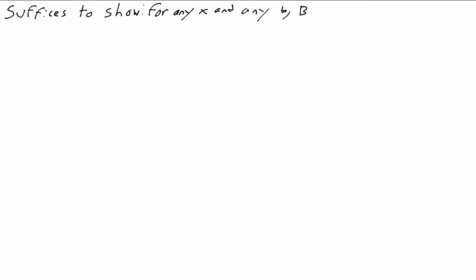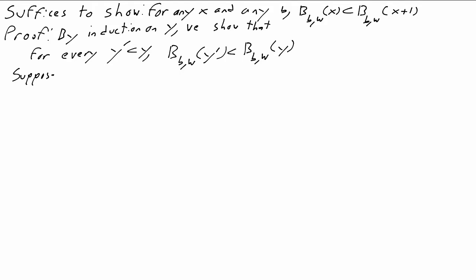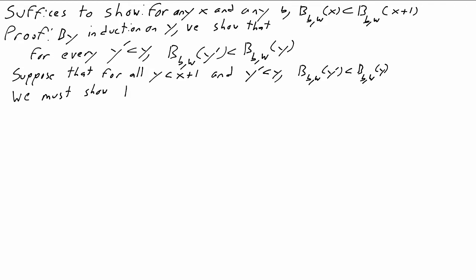So all we need to prove is that for any x and any base b, b_{b,omega}(x) is less than b_{b,omega}(x + 1). More generally, we're going to prove by induction on y that whenever y' < y, then b_{b,omega}(y') < b_{b,omega}(y). So let's assume the inductive hypothesis: for every y less than x + 1, assume we've already proven that whenever y' < y, b_{b,omega}(y') < b_{b,omega}(y). We're going to prove that b_{b,omega}(x) < b_{b,omega}(x + 1), and the inductive hypothesis will then tell us that whenever y' < x + 1, b_{b,omega}(y') < b_{b,omega}(x + 1).